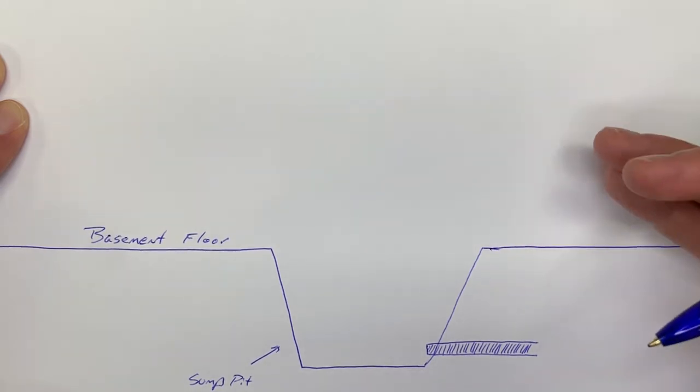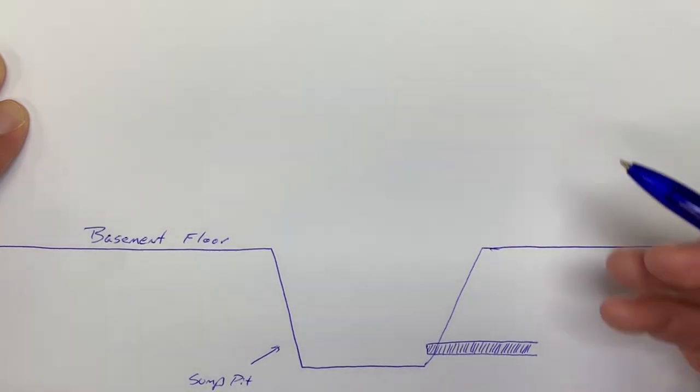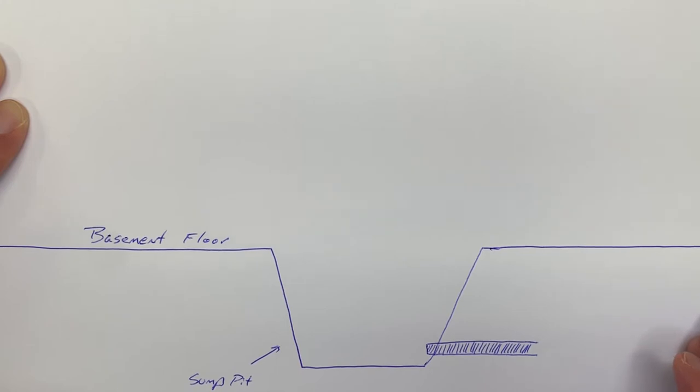It's like your basement's underwater, so to speak, if you don't have a path of least resistance, and that is your footer drain, which is a corrugated four-inch piece of piping that collects water.